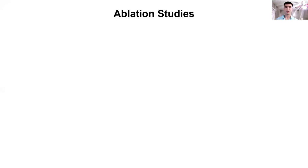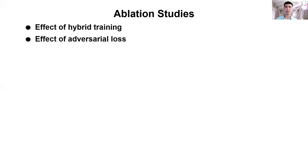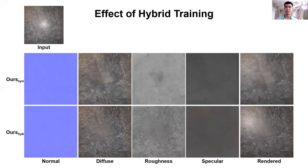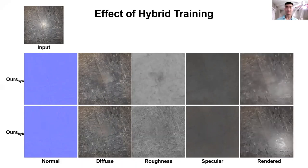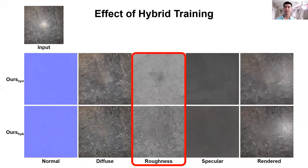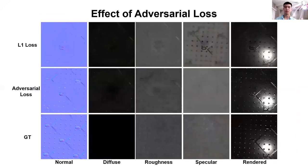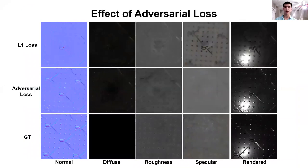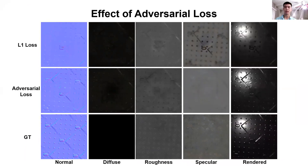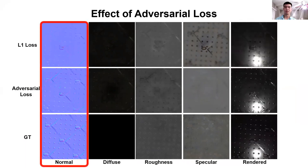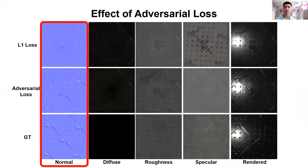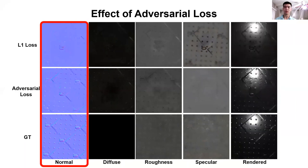Now I will briefly talk about ablation studies. I will show the effects of hybrid training and the effect of adversarial loss on the quality of the renderings. Our hybrid network is better at reproducing the appearance of specular highlights, and is able to properly capture the roughness of scratches, producing detailed highlights. To analyze the effect of adversarial loss, we compare results using only L1 loss against our approach trained with the full loss. Training with only L1 loss fails to capture details, especially in the normal maps. Our approach with the full loss function produces sharper results with more details, demonstrating the benefits of the adversarial loss.